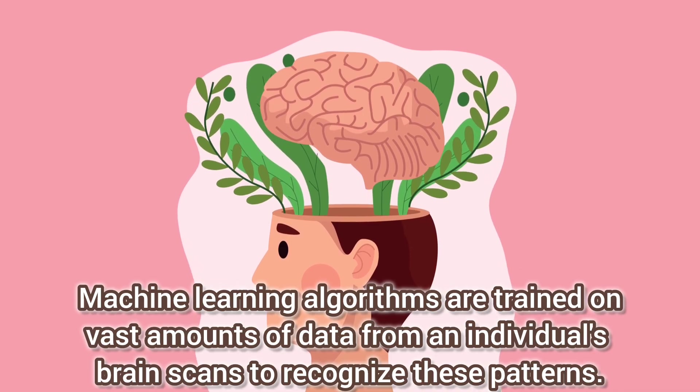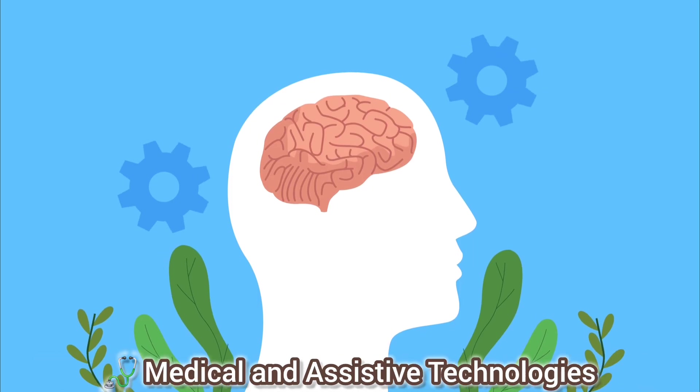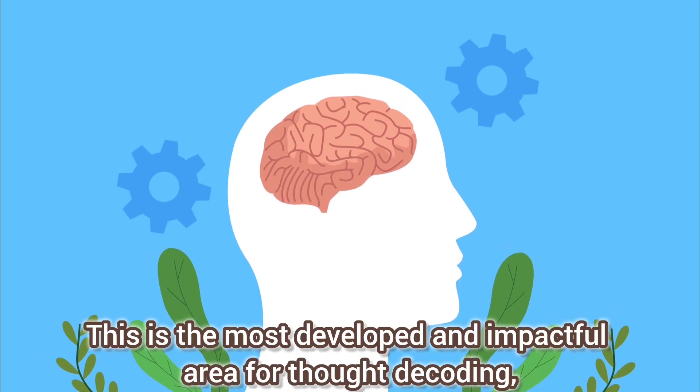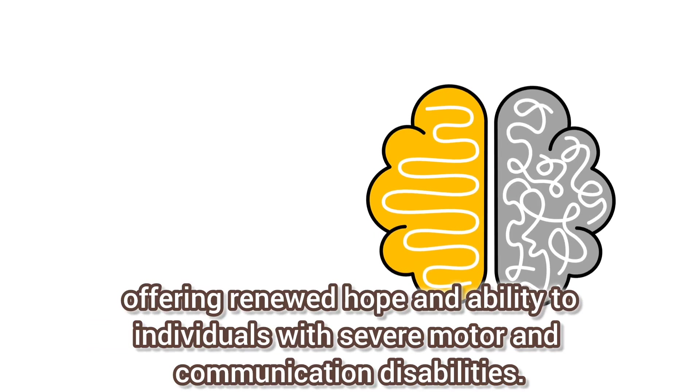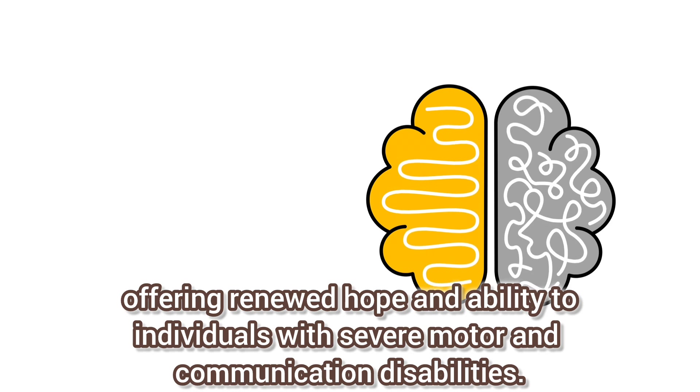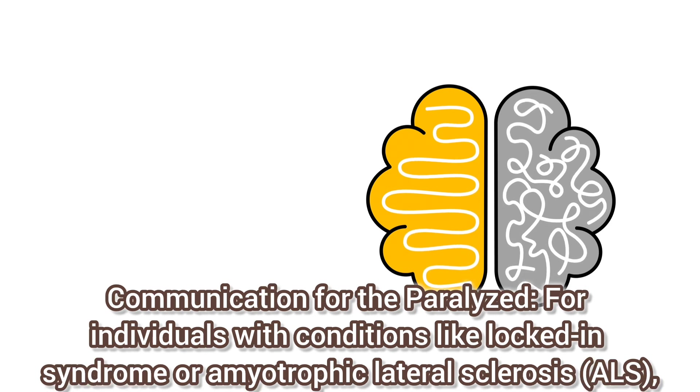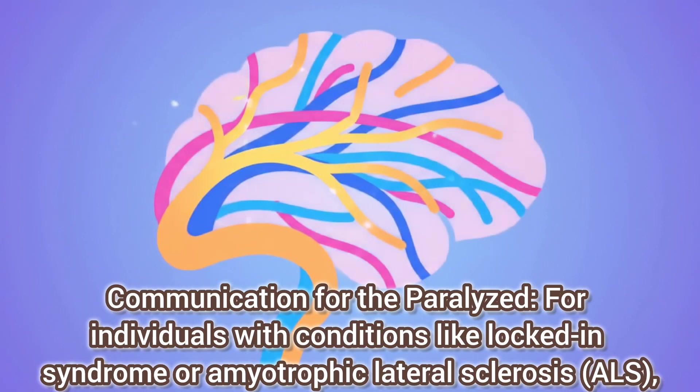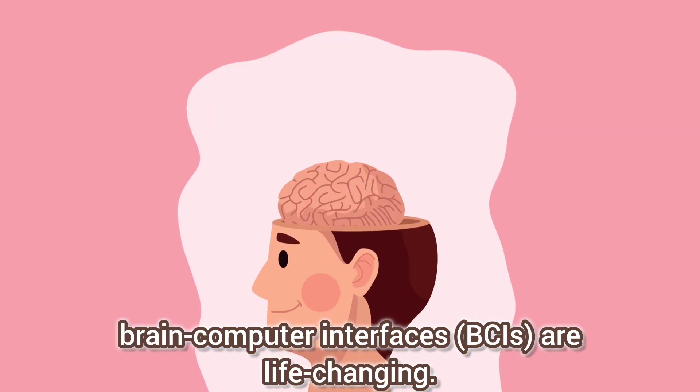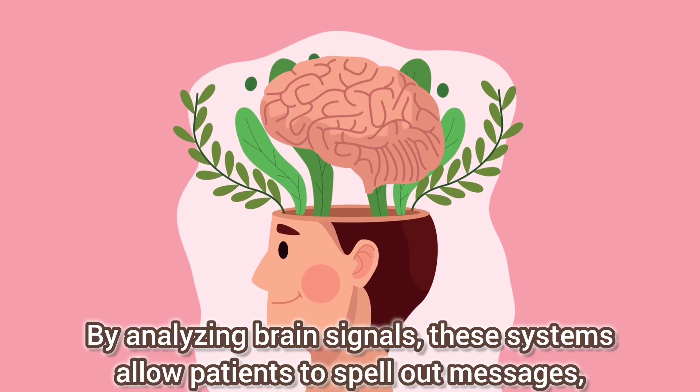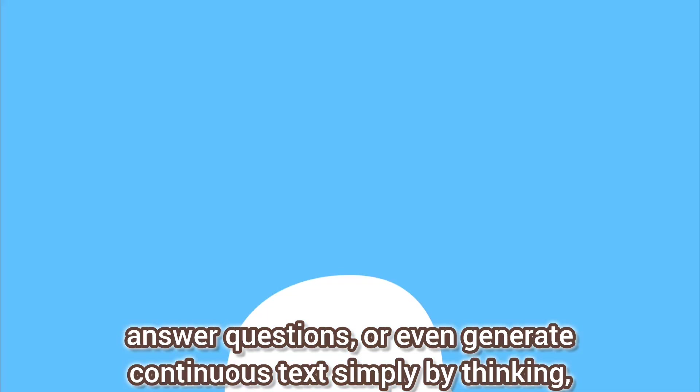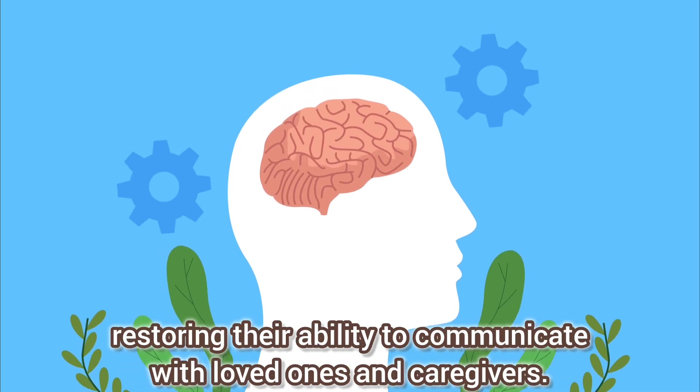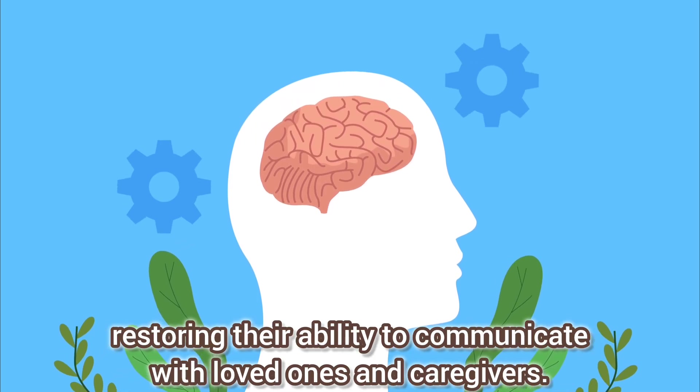Why do we want to decode what's on our minds? Medical and assistive technologies: this is the most developed and impactful area for thought decoding, offering renewed hope and ability to individuals with severe motor and communication disabilities. Communication for the paralyzed: for individuals with conditions like locked-in syndrome or amyotrophic lateral sclerosis (ALS), brain-computer interfaces (BCIs) are life-changing. By analyzing brain signals, these systems allow patients to spell out messages, answer questions, or even generate continuous text simply by thinking, restoring their ability to communicate with loved ones and caregivers.